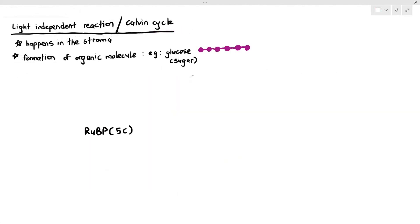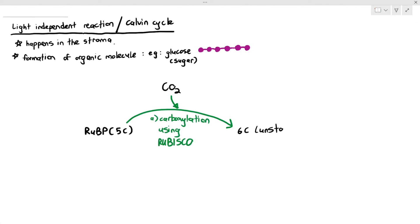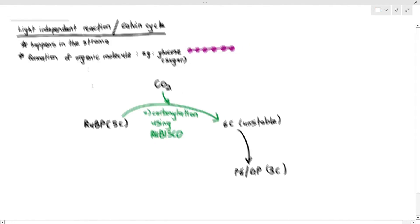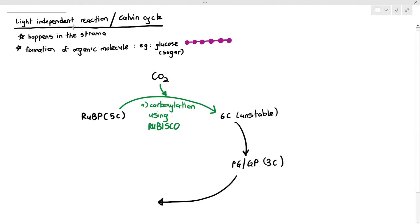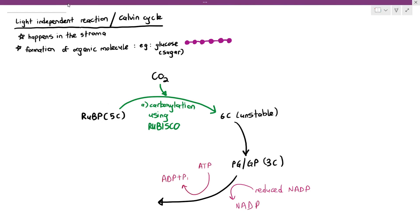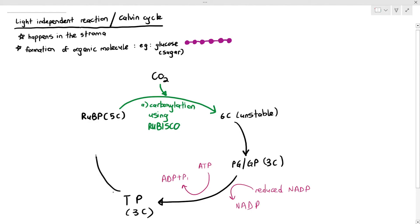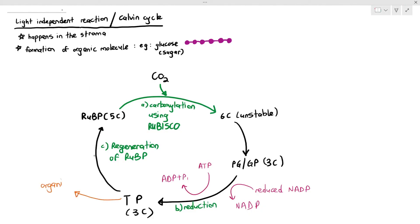To simplify for the exam: RuBP, a five-carbon molecule, is carboxylated with carbon dioxide, catalyzed by Rubisco, forming an unstable six-carbon molecule that splits into GP or PG. GP undergoes reduction — receiving hydrogen to form carbon-hydrogen bonds — requiring both ATP and reduced NADP. This produces triose phosphate, or TP. Some TP is regenerated back into RuBP, and that process also requires ATP.